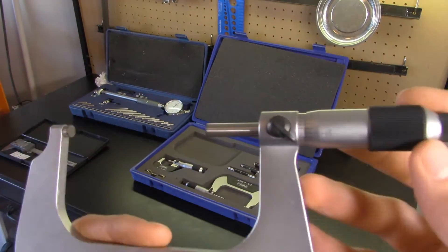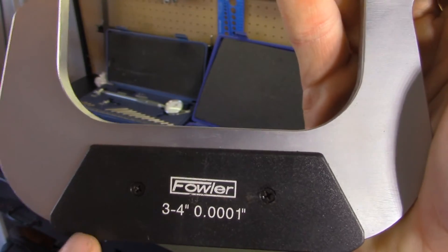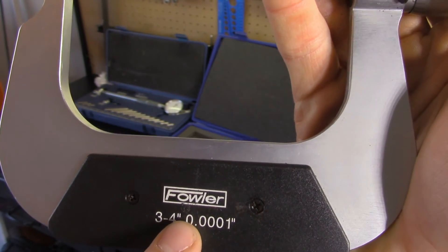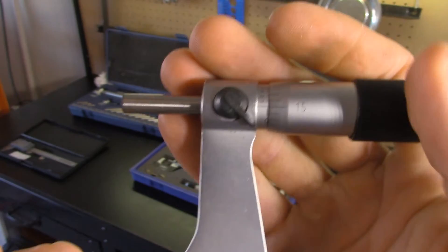Now that your tool is zeroed, you will need to know how to read them. First we know that all measurements will be between three and four inches because this is a three to four inch mic.